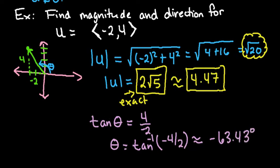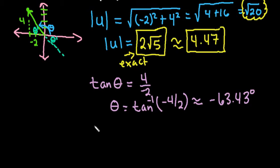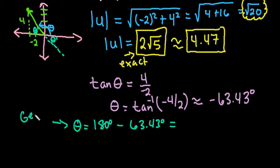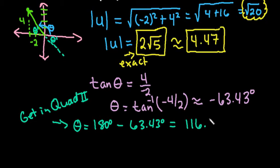This is where you have to remember what your calculator gives you. When it finds the inverse of tangent, it's either going to give your answer in quadrant 1 or quadrant 4. So this reference angle — let's call it theta prime — equals 63.43 degrees. Since our vector is in quadrant 2, all I have to do is take 180 degrees and subtract 63.43 degrees to get theta in quadrant 2. Simplifying, this gives me 116.57 degrees.